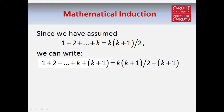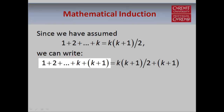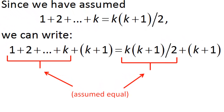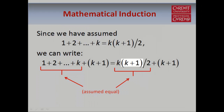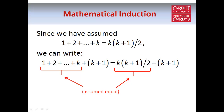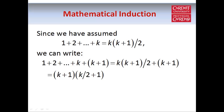Therefore we can write that the sum of the first k plus 1 natural numbers is equal to k times k plus 1 over 2 plus k plus 1. Because all we've done is use the fact that these two things are assumed to be equal. And now we can take out k plus 1 as a common factor, since it appears in both terms. So we can rewrite the right-hand side as k plus 1 times k over 2 plus 1, and that's just the same as k plus 1 times k plus 2, all divided by 2.